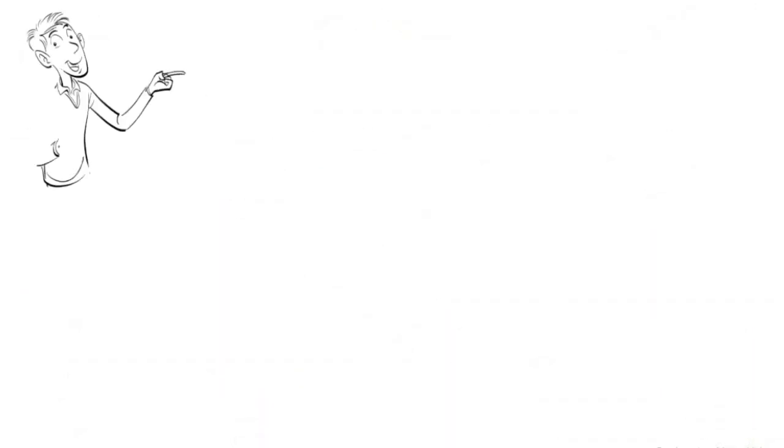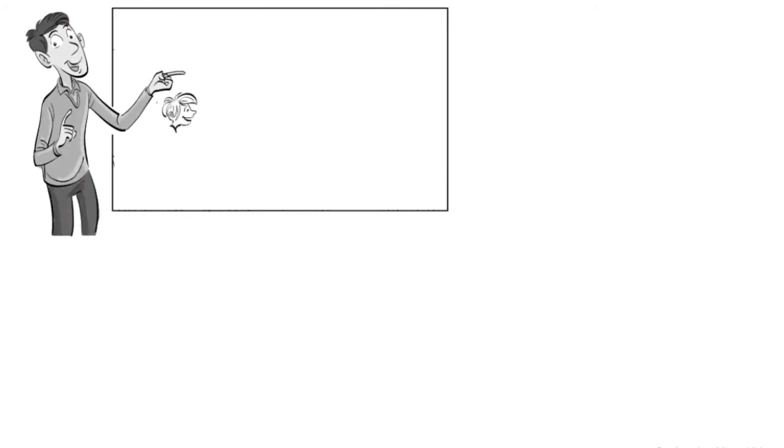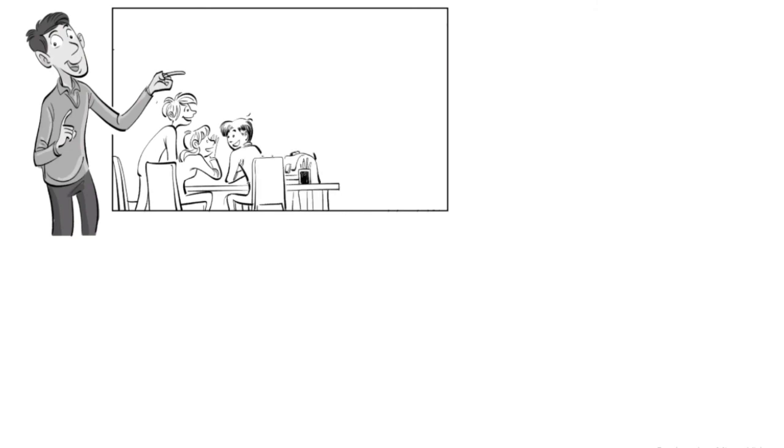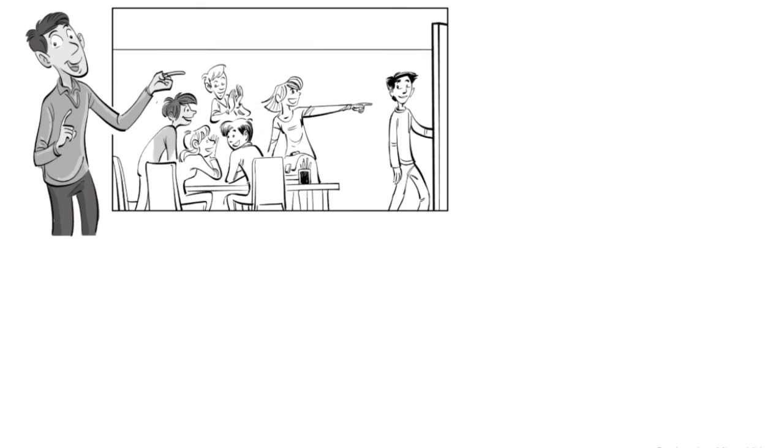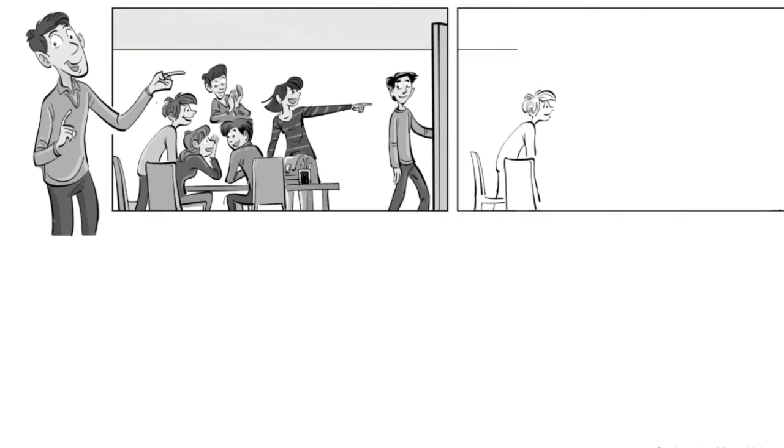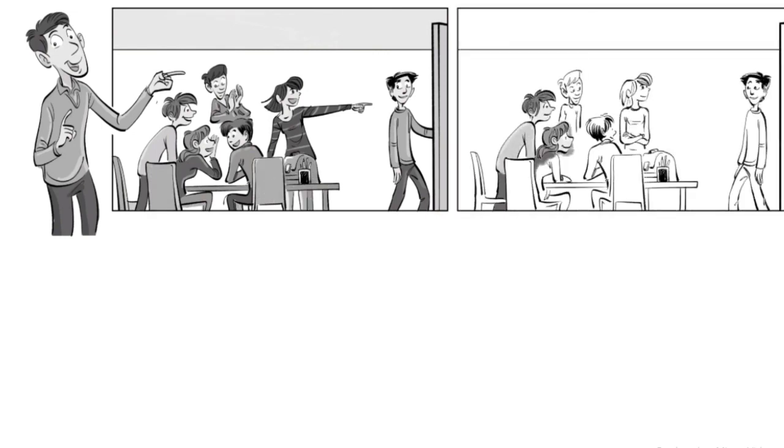You can try this classroom exercise on positive reinforcement. One individual must exit the room. Now, decide on a task which that individual will complete, such as finding a particular book. Then, choose a non-verbal way of reinforcing that task, such as clapping your hands. Invite the person to come back into the room, and let them try and complete the task, but don't give any instructions.